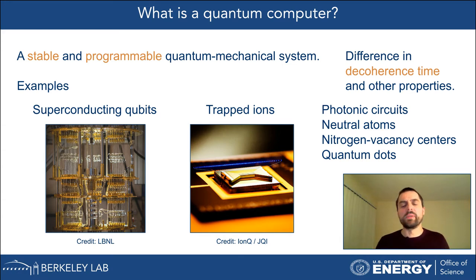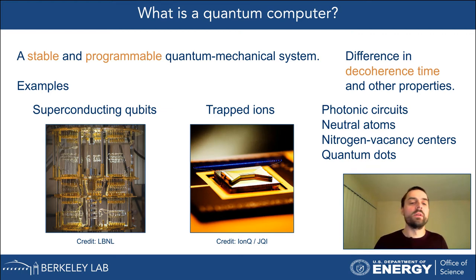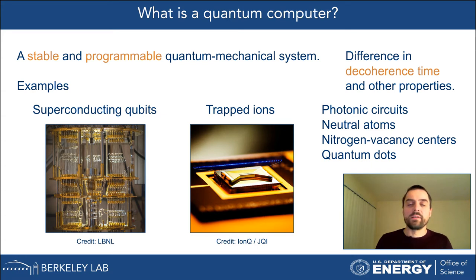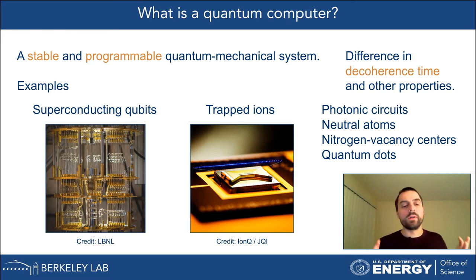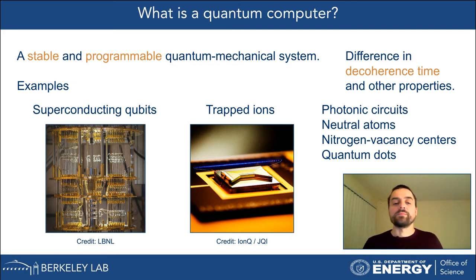The physical realization and properties of qubits differ across these technologies, and error mitigation will be different for each platform. For instance, one important property is decoherence time — how long the quantum computer stays stable. There are huge differences: for superconducting qubits, decoherence time can be 50 to 100 microseconds, while for trapped ions it can be minutes or even hours. So decoherence is less of a problem for trapped ions than for superconducting qubits.